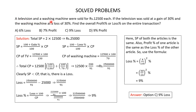A television and a washing machine were sold for Rs 12,500 each. The television was sold at a gain of 30 percent and the washing machine at a loss of 30 percent. Find the overall profit percent or loss percent on the entire transaction. The total selling price is 2 multiplied by 12,500, which is Rs 25,000.